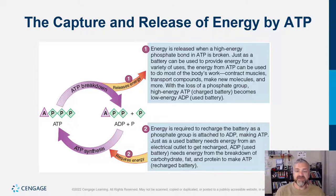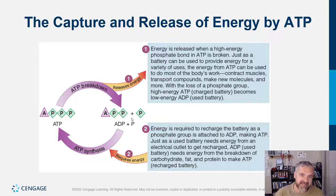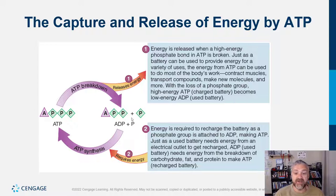These are like the world's most efficient rechargeable batteries. Energy is required to recharge the battery — a phosphate group is attached to ADP, making ATP. Just as a used battery needs energy from an electrical outlet to get recharged, ADP needs energy from the breakdown of carbohydrates, fats, and proteins to make ATP. There's also a temporary method of recharging ADP called the creatine phosphate or phosphocreatine system, but that's covered in the metabolism playlist.